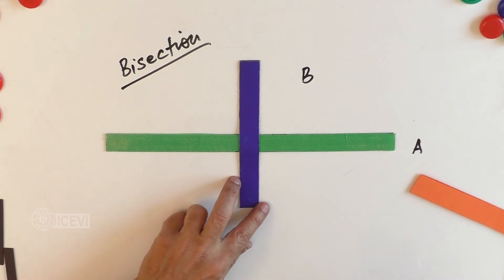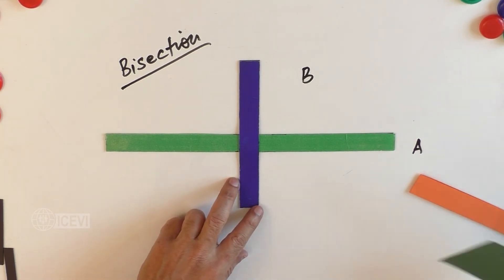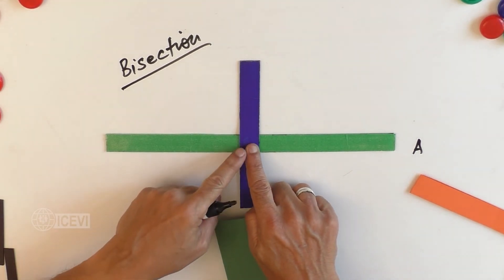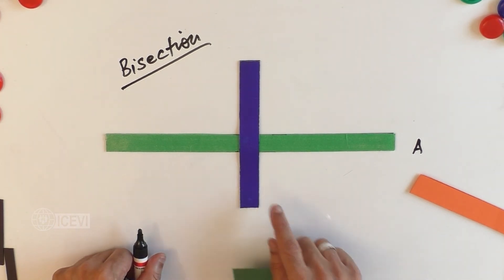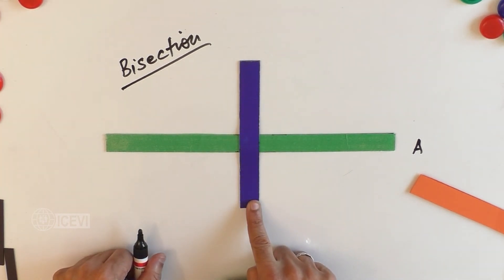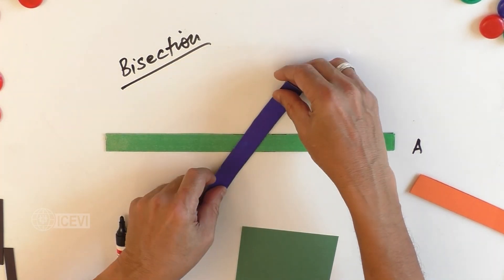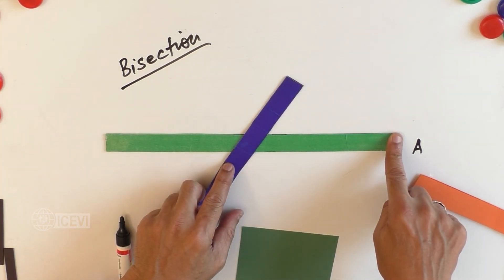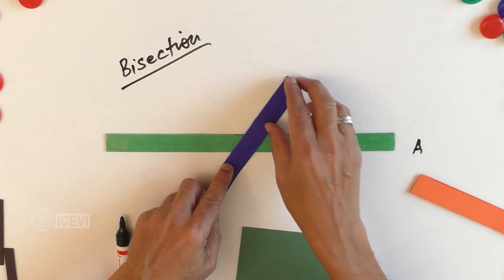Now let us assume that line B is going through line A in such a way that the intersecting point is dividing line A into two halves. This is a bisector. But at the same time, the bisector may be in different directions too. Still, line A is divided into two halves, but the angle between the two lines is not 90 degrees.